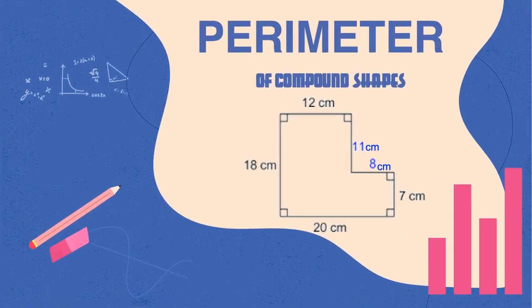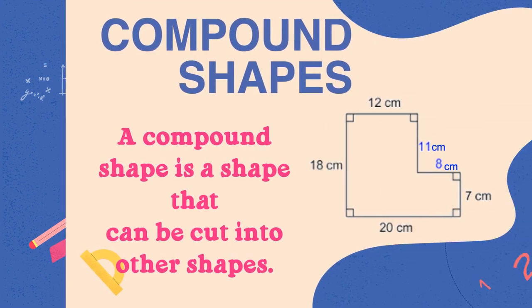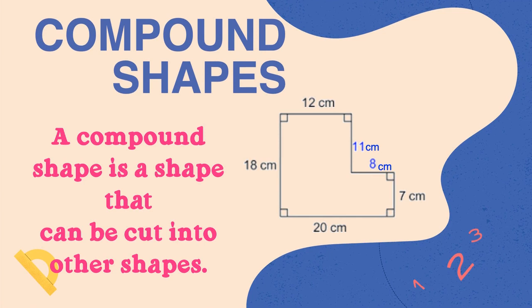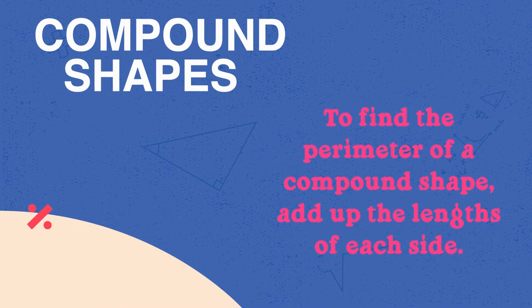Now let's talk a little bit about a compound shape. What is a compound shape? Well, a compound shape is a shape that can be cut into other shapes. Let's take a look at our example. Can you see where we can cut this shape to form two shapes? Yes, that's correct — that's one of the places where we can cut it so that it forms two separate shapes. That's how we get a compound shape. But how do we find the perimeter of a compound shape? To find the perimeter of a compound shape, add up the lengths of each side.